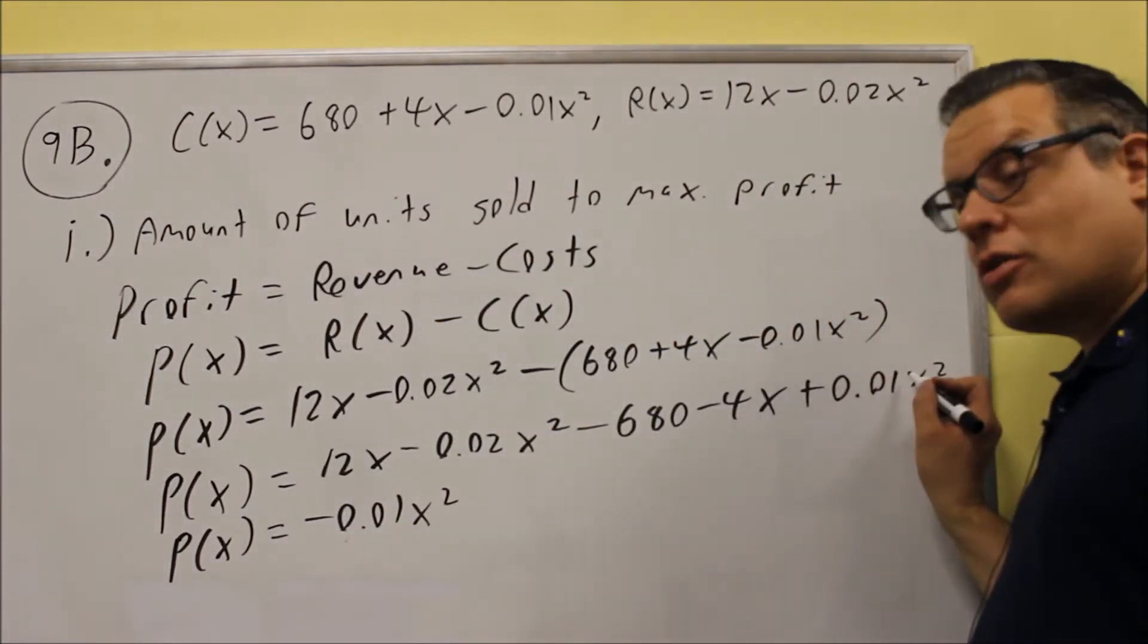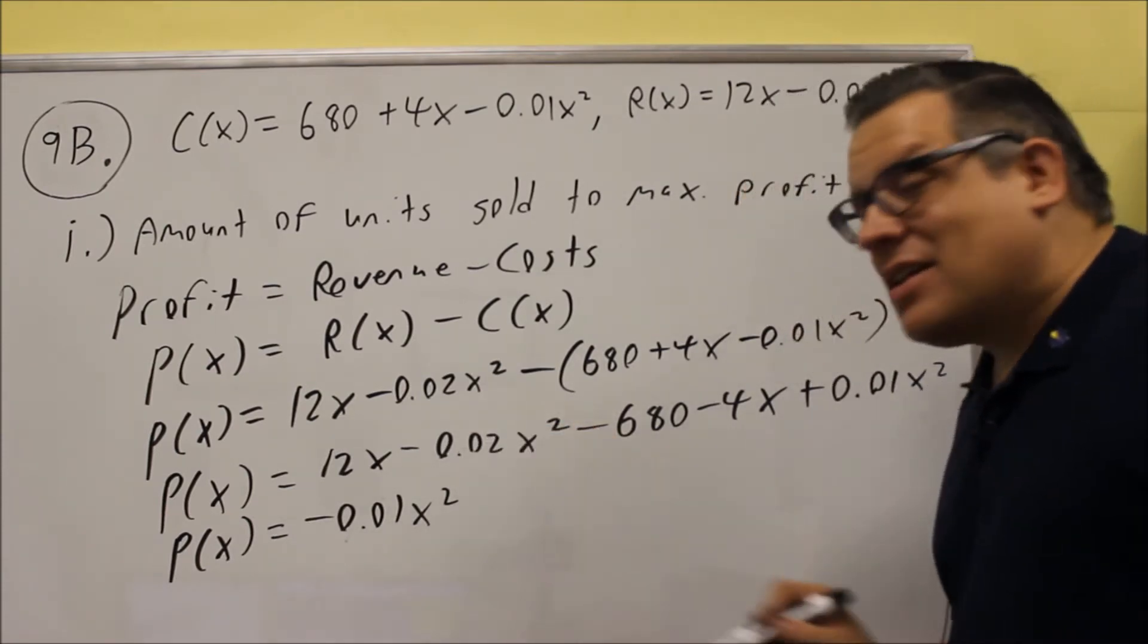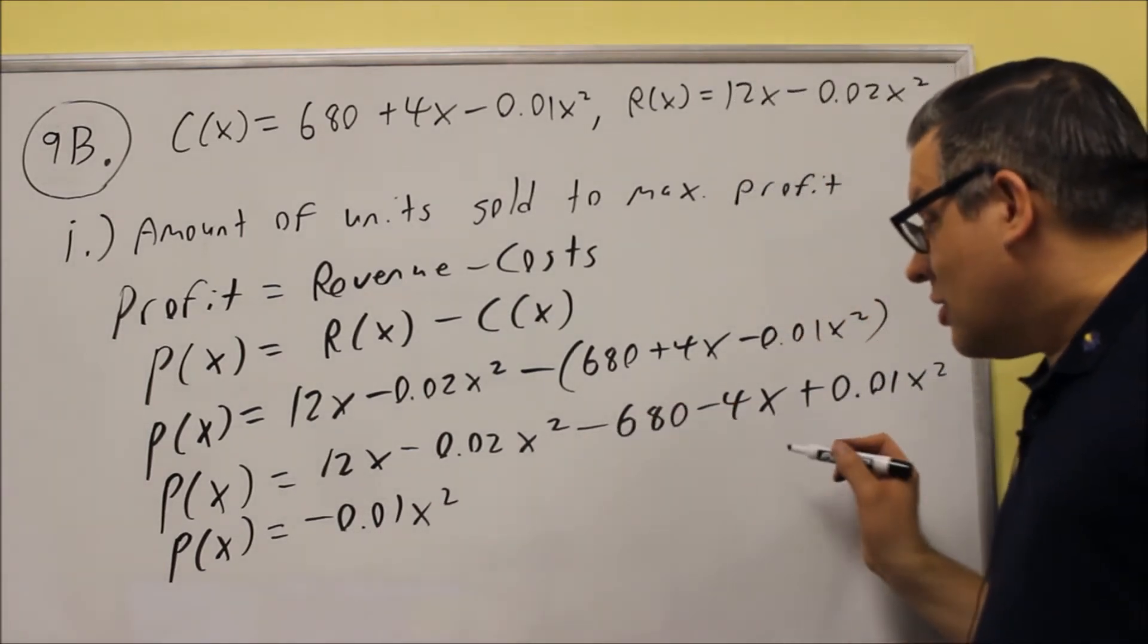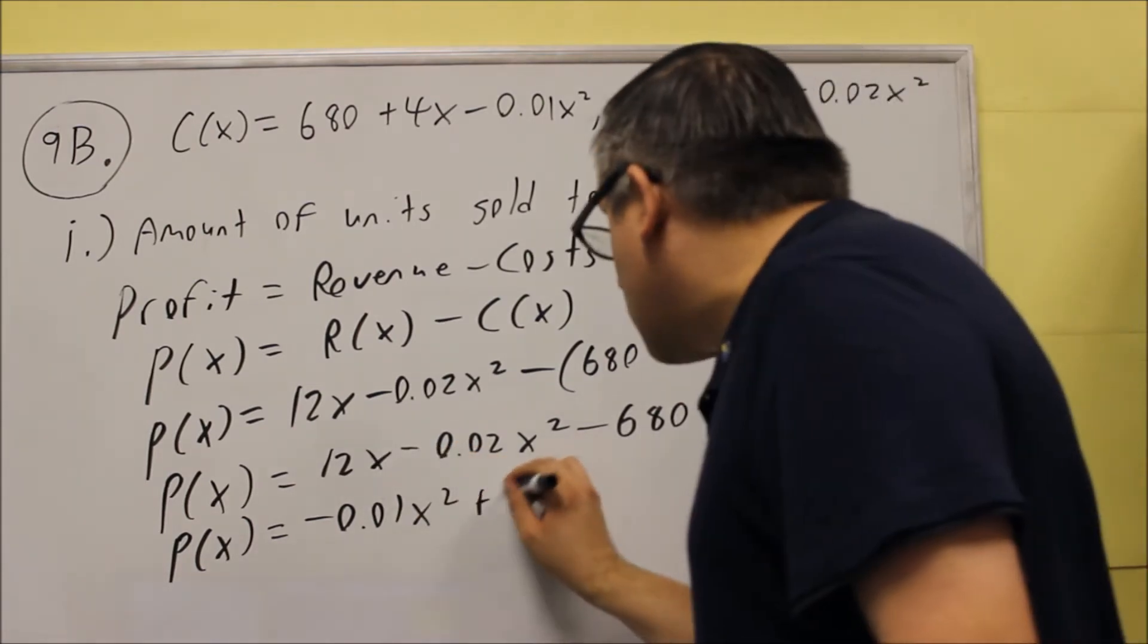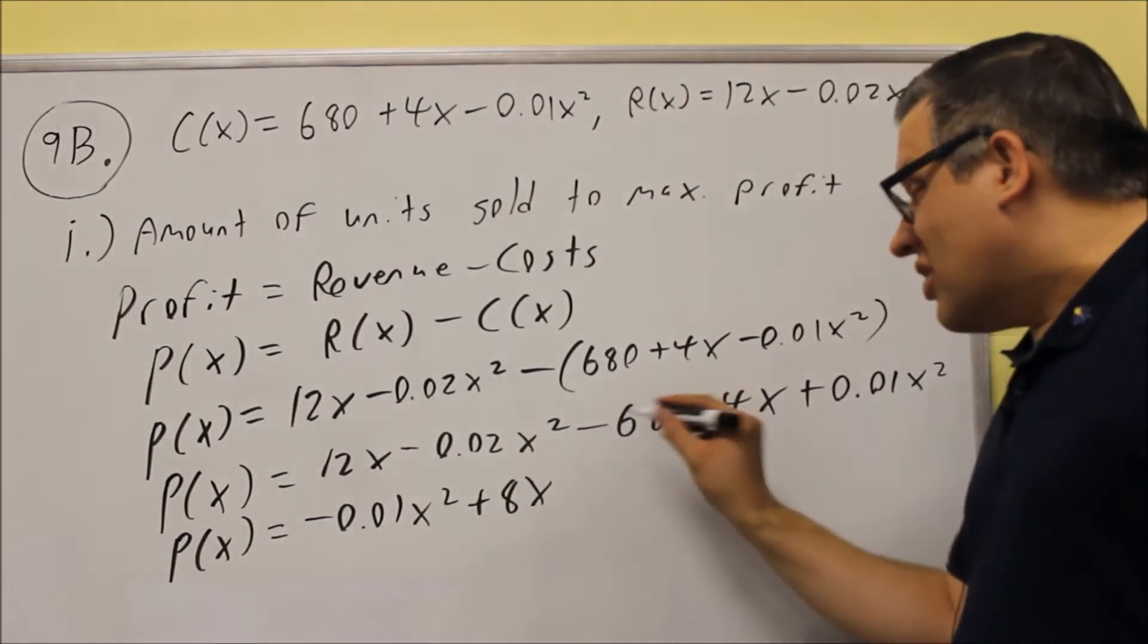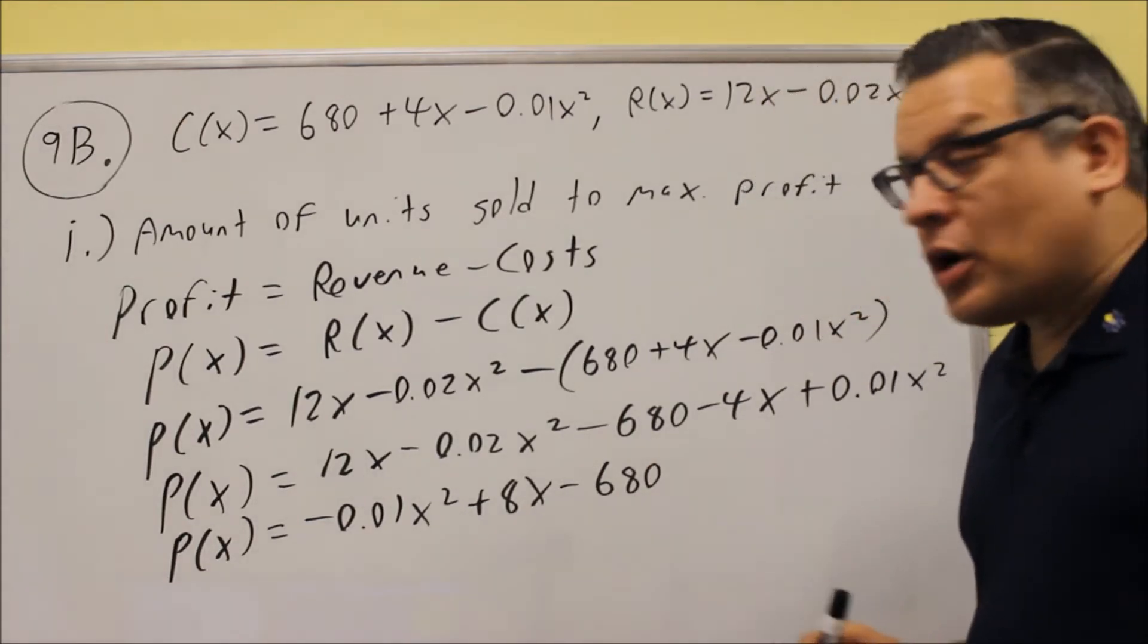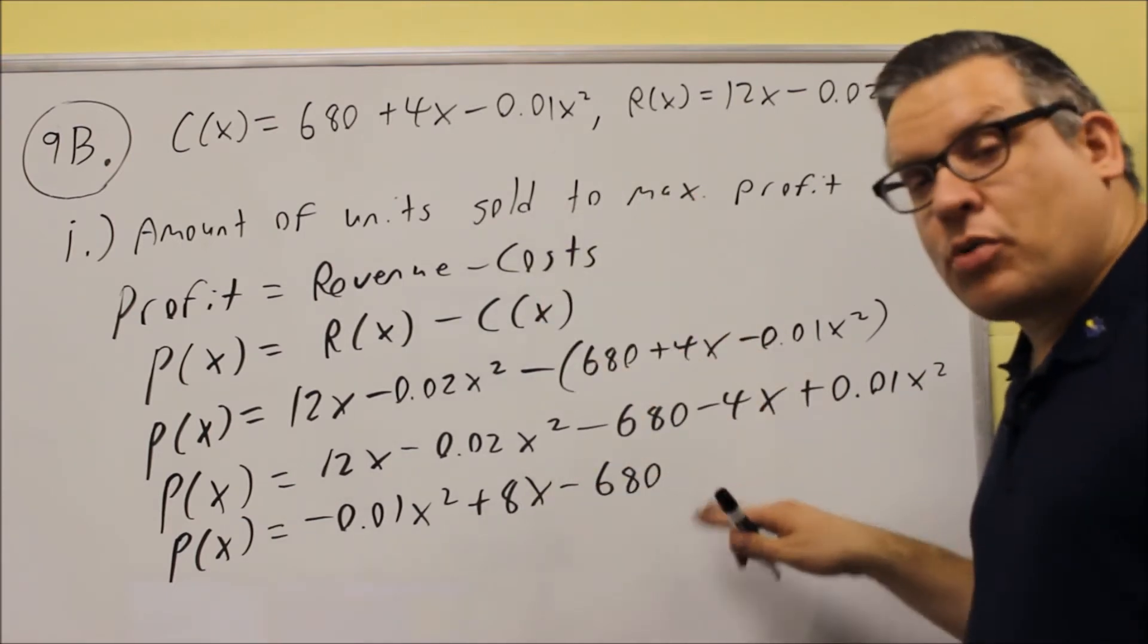So we have that when we combine it. So if you take this term together, positive 0.01, and subtract negative 0.02, you get negative 0.01 left over, and that's going to be the x squared. Next, we have a 12x minus 4x, that's 8x. The 680, we don't have any other like terms to combine that with, so we'll leave it like that. So this is going to be your profit equation that we're going to work with in this problem. So we had to do this work to get down to the profit function.